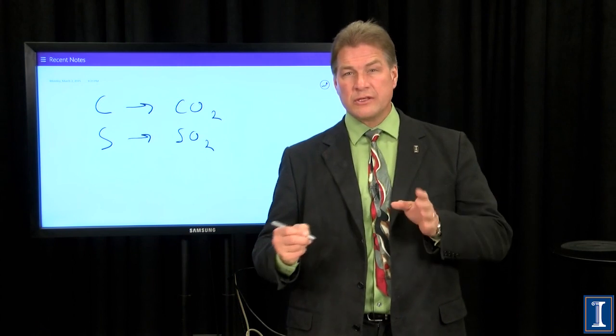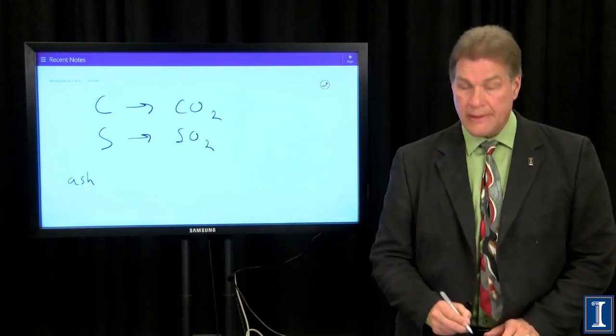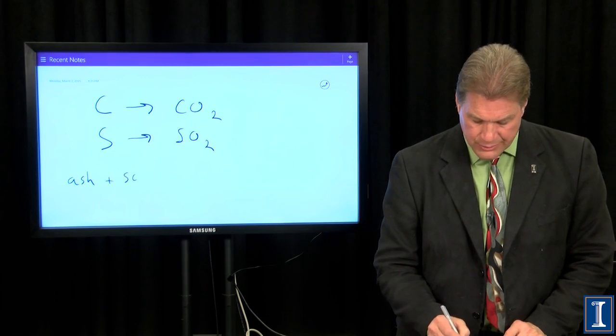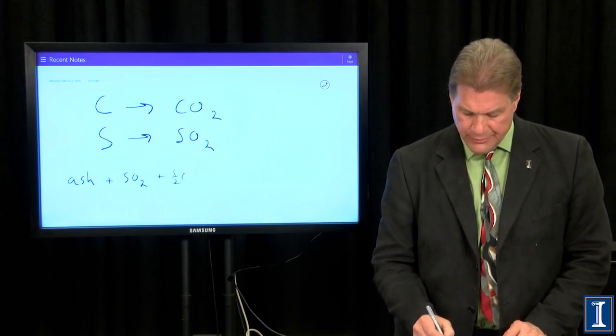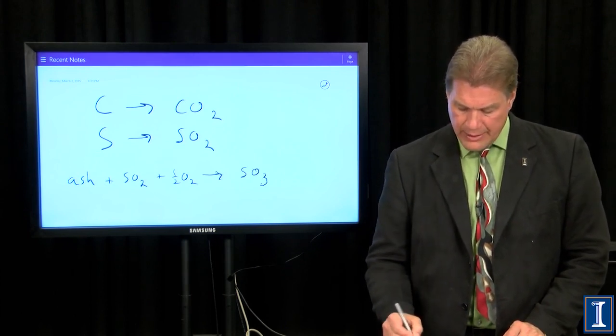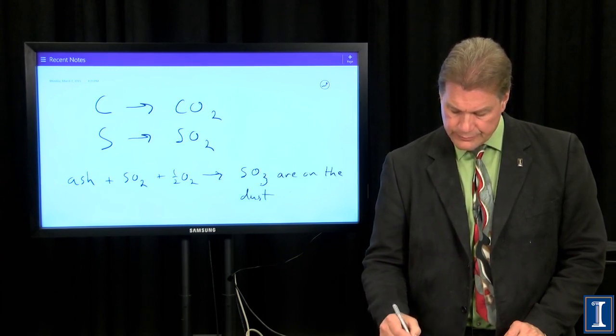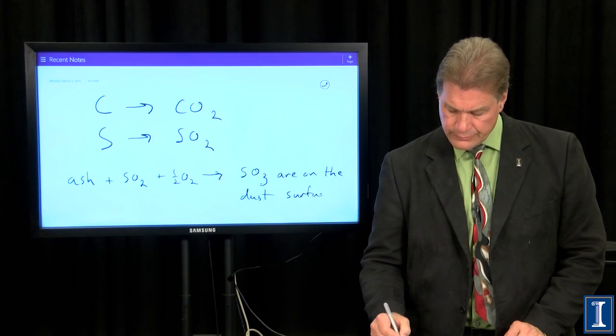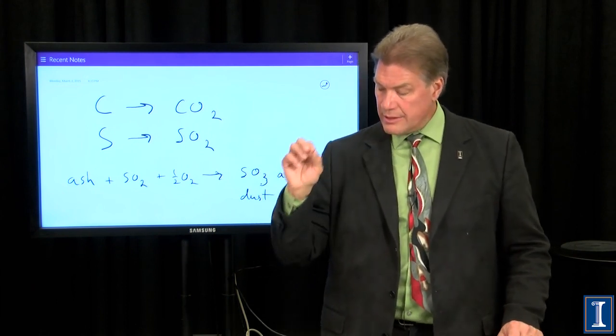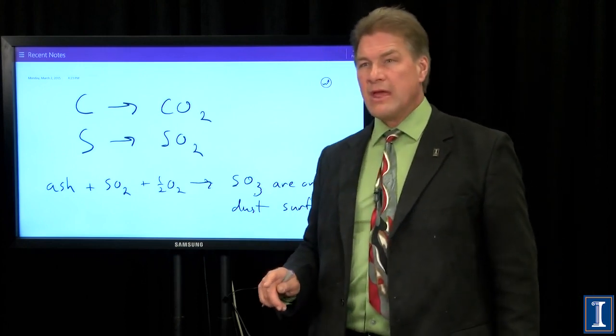Now sulfur dioxide itself is relatively stable. But if I take some ash, some dust, coal power plants really good at producing a lot of fine dust, plus SO2, and plus a little more oxygen from the air, I can get sulfites, SO3. And these are on the dust surface. This SO3 containing dust is called dry acid precipitate. So this SO3 that's on the dust surface, what happens to it?